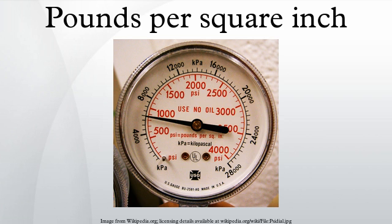KSI, the kilo-pound-per-square-inch, is a scaled unit derived from psi, equivalent to a thousand psi. KSI are not widely used for gas pressures; they are mostly used in materials science, where the tensile strength of a material is measured as a large number of psi.